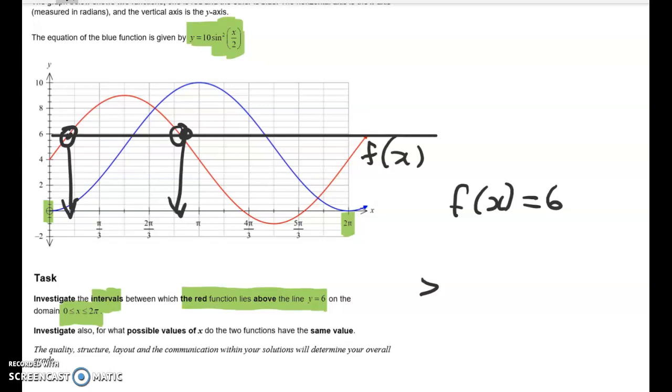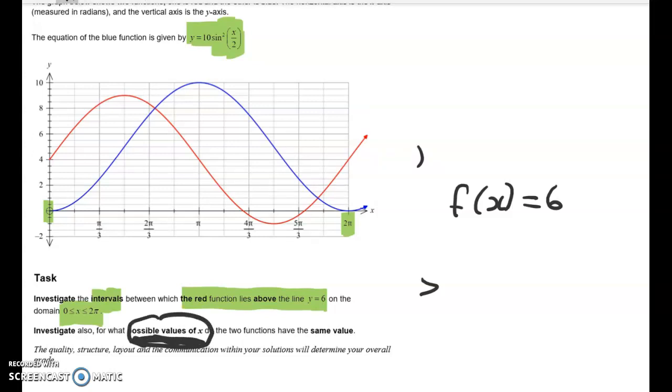Now, in the second video, we have to investigate for what possible values of x do the two functions have the same value. So here we want to generalize the situation. So we're going to be finding general solutions for the two equations, and that's going to generate a whole lot of places, not just the ones shown in this graph, where the two functions will have the same value. But then I think it would also be nice to find the particular solutions here and here. And we can see that there'll be two of them between 0 and 2 pi. So let's get started.